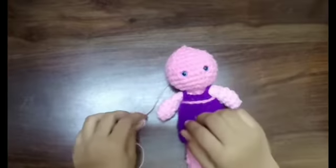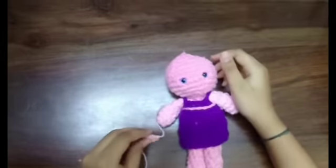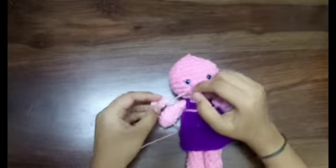When we start a spherical figure like a doll's head or a ball, we always start with a magic circle and do an increase.